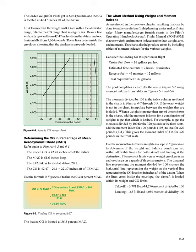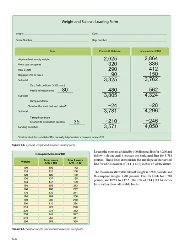Takeoff: 3,781 pounds and moment divided by 100 of 4,296. Landing: 3,571 pounds and moment divided by 100 of 4,050. Locate the moment/100 diagonal line for 4,296 and follow it down until it crosses the horizontal line for 3,781 pounds. These lines cross inside the envelope at the vertical line for a CG location of 113.6 inches aft of the datum. The maximum allowable takeoff weight is 3,900 pounds, and this airplane weighs 3,781 pounds. The CG limits for 3,781 pounds are 109.8 to 117.5 inches, and the CG of 113.6 inches falls within these allowable limits.